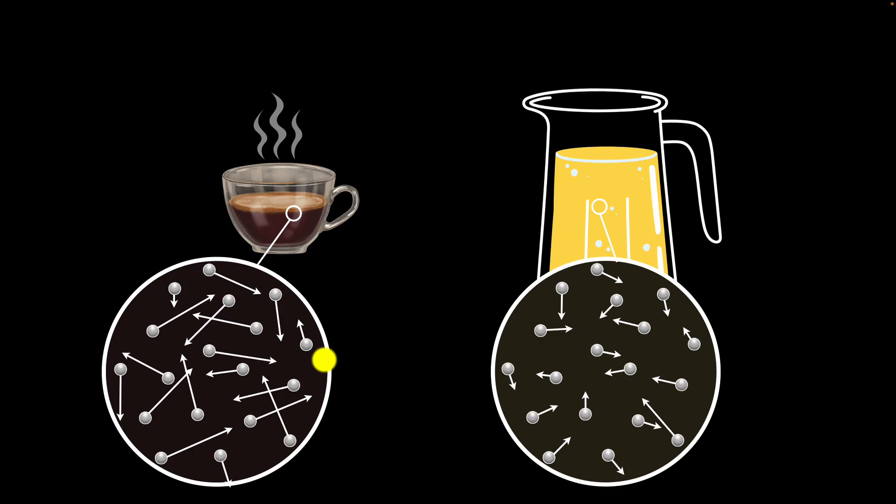They're all moving. They have kinetic energy. Some particles are moving slowly represented by smaller arrow marks. So that means lower kinetic energy. Other particles are moving faster which has higher kinetic energy.